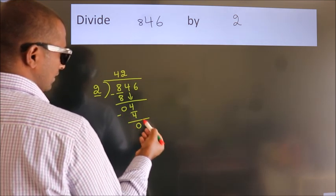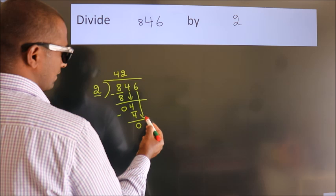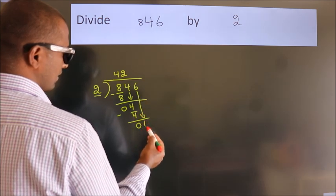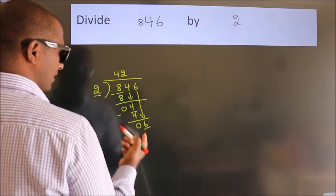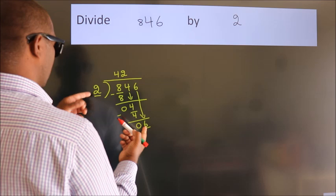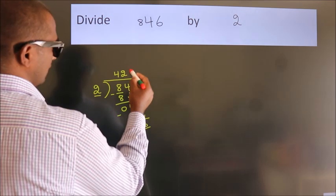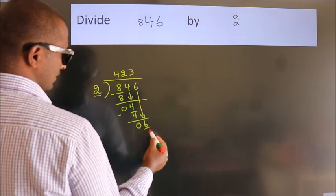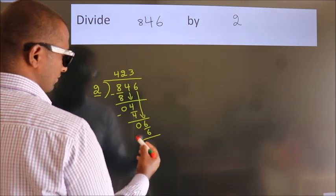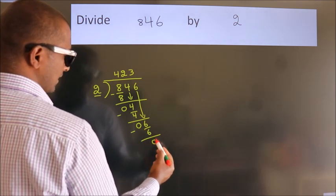After this, bring down the beside number. So 6 down, so 6. When do we get 6? In 2 table, 2 3s 6. Now we subtract, we get 0.